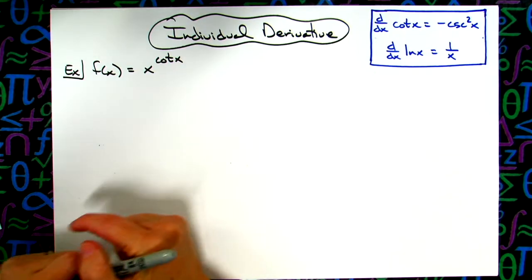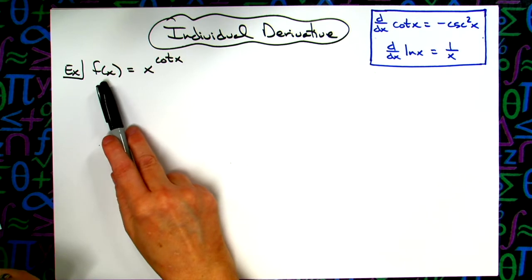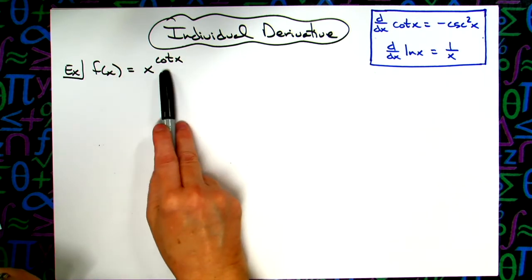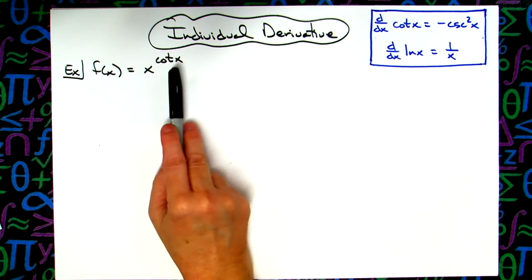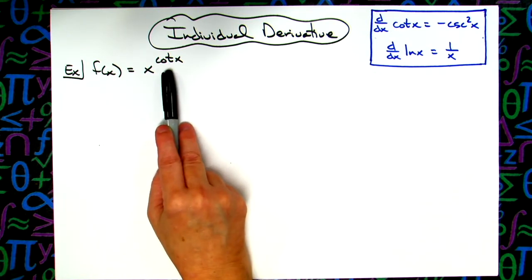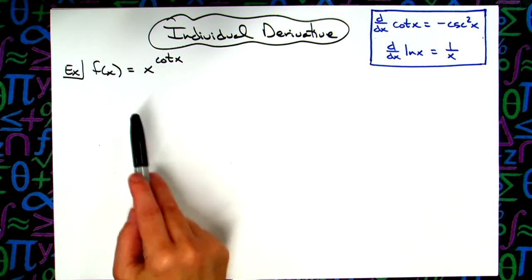In this video, we're going to take a look at an individual derivative. We're going to be looking at f(x) = x^(cot x). We're going to see that our base is x and our exponent is cot x, so we're going to want to use logarithmic differentiation.